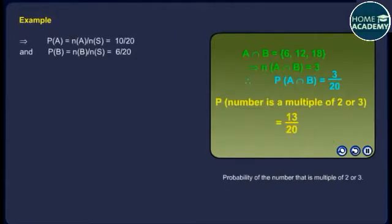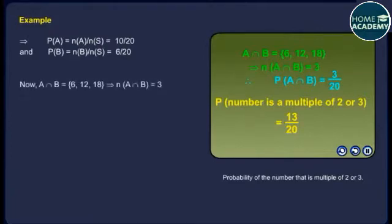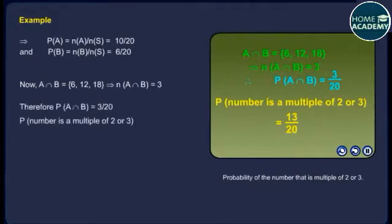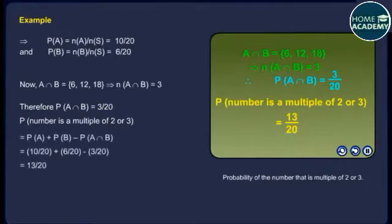P(A) = N(A)/N(S) = 10/20 and P(B) = N(B)/N(S) = 6/20. Now A∩B = {6, 12, 18}, so N(A∩B) = 3. Therefore P(A∩B) = 3/20. P(number is a multiple of 2 or 3) = P(A) + P(B) − P(A∩B) = 10/20 + 6/20 − 3/20 = 13/20.